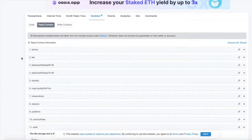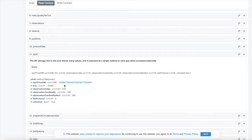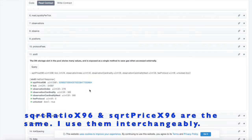We wrote code together in the past that converts the square root ratio x96 in a pool's slot zero into the price ratio between two tokens in the pool.